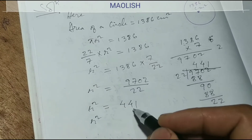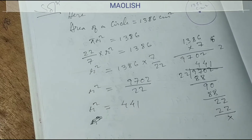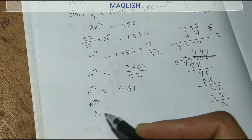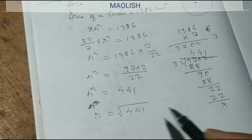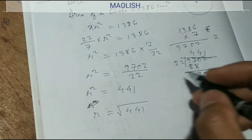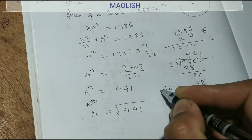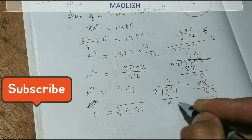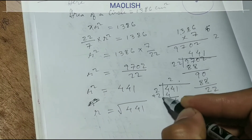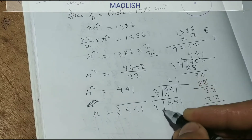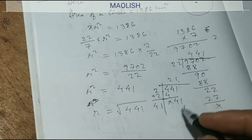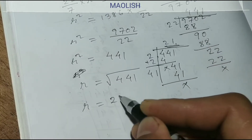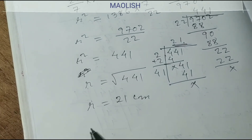So R squared equals 441. Now taking the square root: square root of 441. 2 squared is 4, remainder 0. 41 comes down. Plus 2, giving 4. 1 into 41 — 41 divided by 41 is 1. So the answer is 21. Therefore R equals 21 cm.